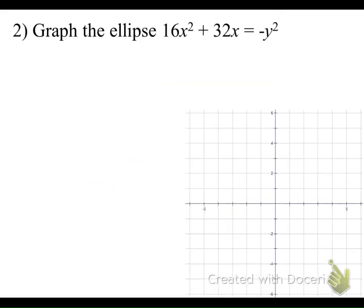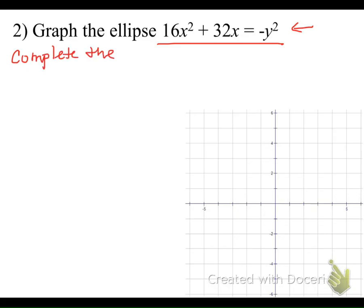For our second example, we need to graph the ellipse, but we can see that this equation is not in standard form — it's in a modified general form. We know it's not standard form because the equation is not set equal to 1 and we don't see those denominators at all. We're going to have to complete the square to get our equation into standard form, similar to the process for circles.